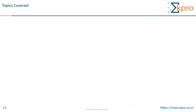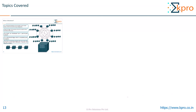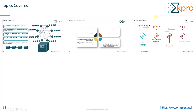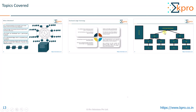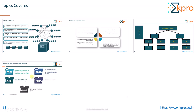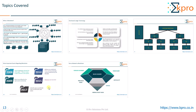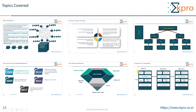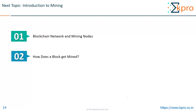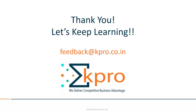Let us have a quick recap of what we covered in this video. In the beginning, we learned about what blockchain is. Next we saw the distributed ledger technology, then the history of blockchain where we also saw what the Merkle tree looks like. Then we had some important events regarding blockchain, then we learned about terms related to blockchain, and finally, what are the components of a single block and how the hash of a block is found out. Thank you for watching. In the next video, I'm going to talk about the blockchain network, the mining nodes, and how a block gets mined. Kindly provide your valuable feedback in the comment section and let us know of any topic you want us to cover or any issue you might be facing in your project. You may write to us at feedback@kpro.co.in. Thank you very much. Let's keep learning.